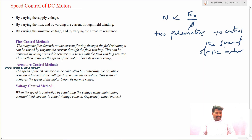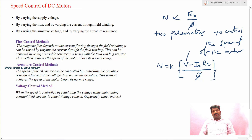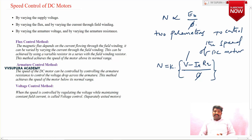We can also write n = K × (V - Ia×Ra) / φ. So we can take V as another parameter to control the speed of the DC motor. From this equation, there are mainly three methods to control the speed of the DC motor. The first one is the flux control method.